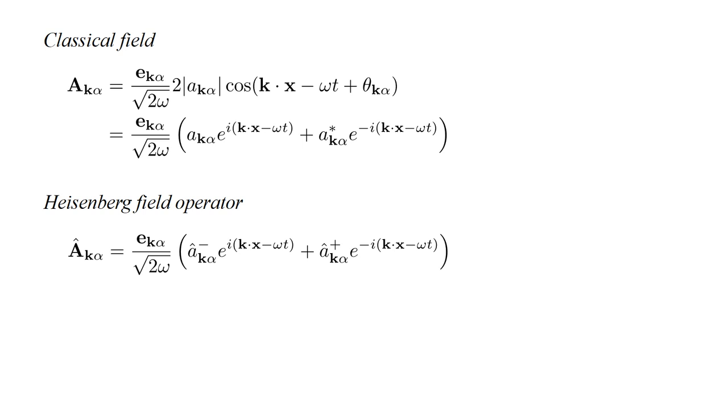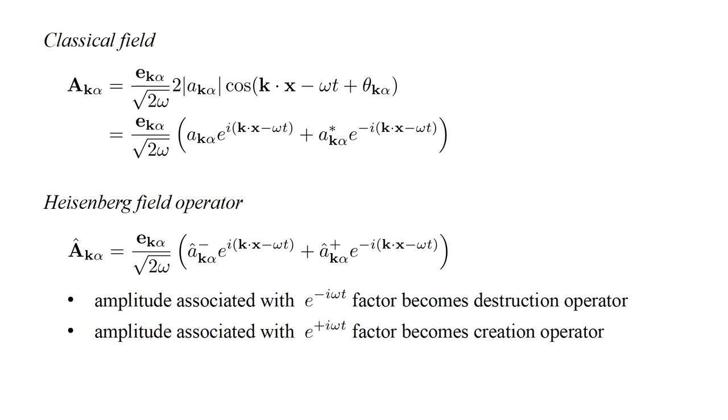Apparently, if we have a classical field expression, we can immediately transition to a quantum field representation by this simple replacement. In the classical field expression, which amplitude factor we denote as the conjugate is arbitrary. What determines the type of operator we replace them by is the time dependence. The amplitude associated with the e to the minus iω t factor becomes the destruction operator, while the amplitude associated with the e to the plus iω t factor becomes the creation operator.